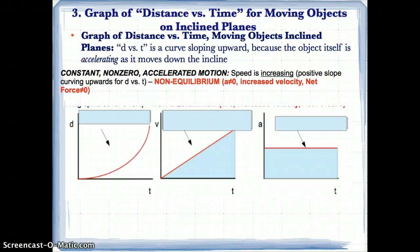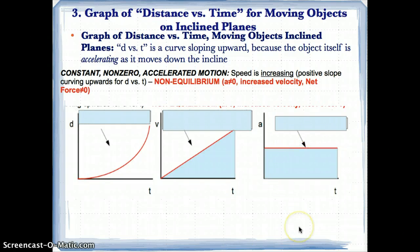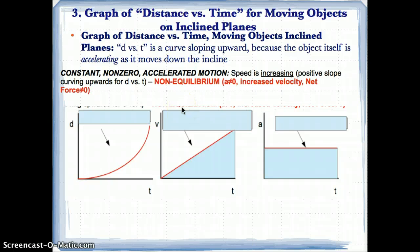Now let's talk about a graph of distance versus time for moving objects on inclined planes. The D versus T graph shows a curve sloping upward because the object is accelerating as it moves down the incline. The distance is constantly changing and V versus T is also changing, so accelerated motion means D versus T has to curve upward. These graphs are for non-equilibrium situations — acceleration is not equal to zero, net force is not equal to zero, and velocity is increasing. V versus T is a positive slope upward, and A versus T is non-zero, confirming acceleration.